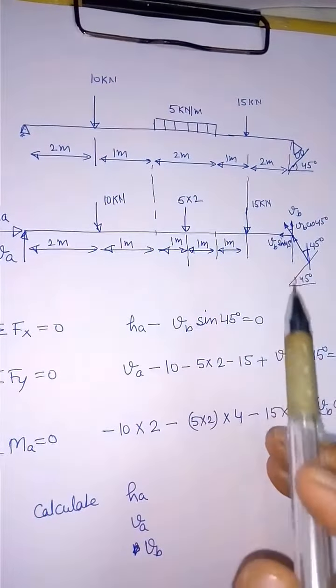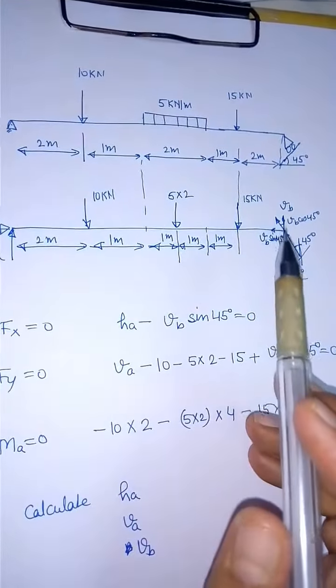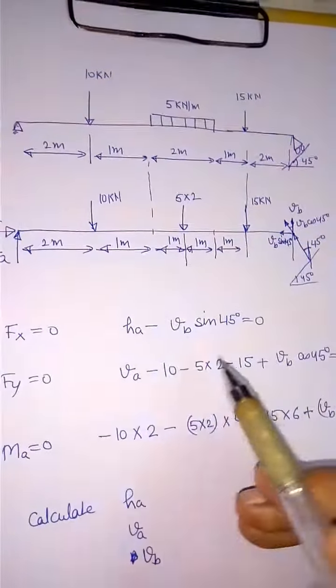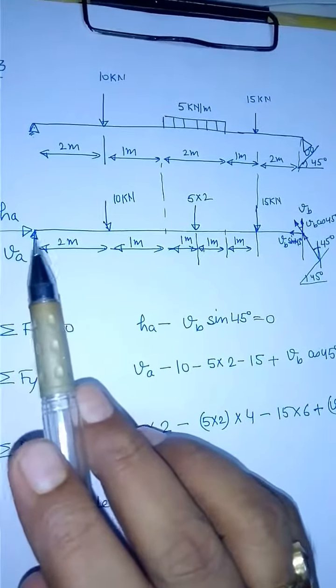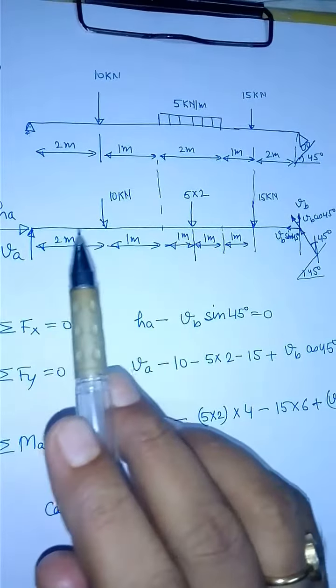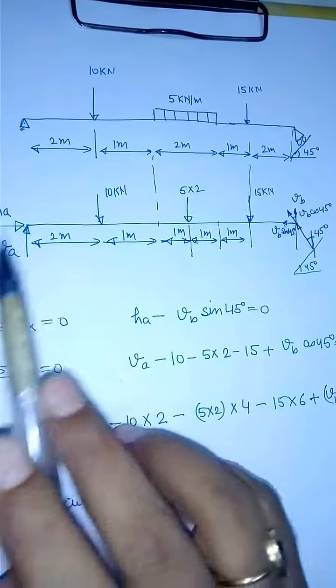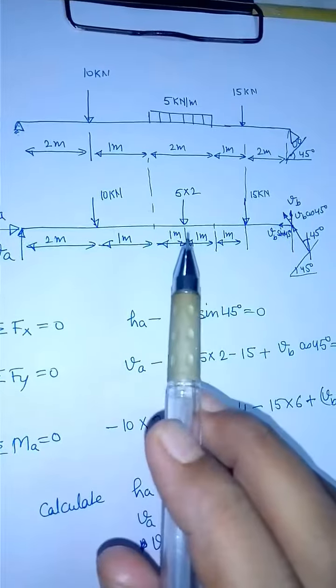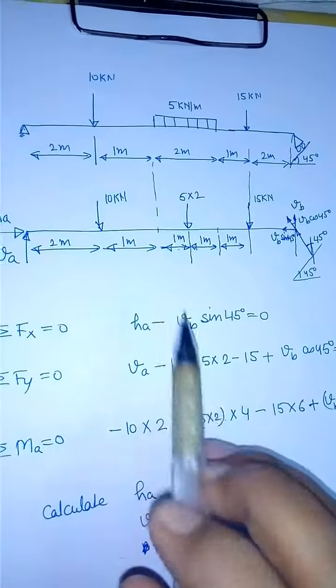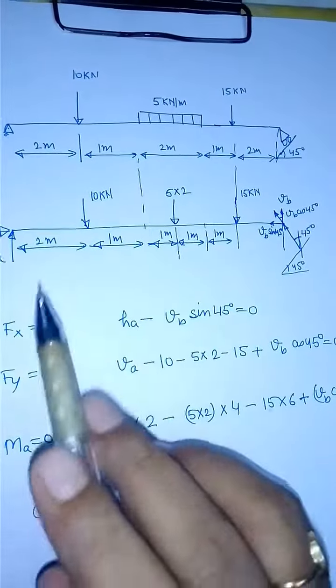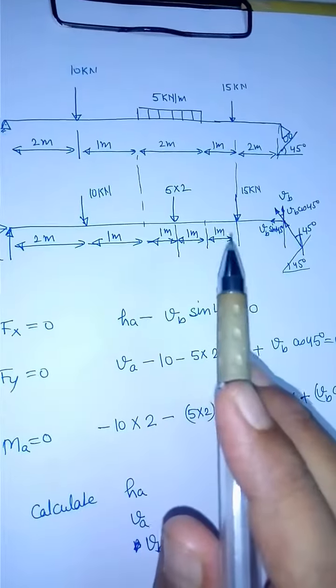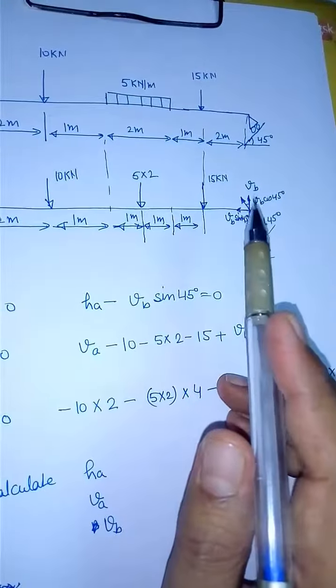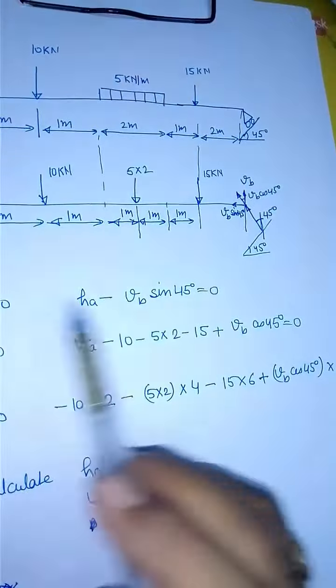We will take moment about this point. Moment of HA here - VA will get 0. Moment of 10: 10 into 2 clockwise, negative. 5 into 2 that is 10, multiply by 2 plus 1 plus 1, that is 4, so this into 4 again clockwise means negative. 15 will also produce clockwise moment, 15 into 6. VB cos 45 will produce anti-clockwise moment about the point.